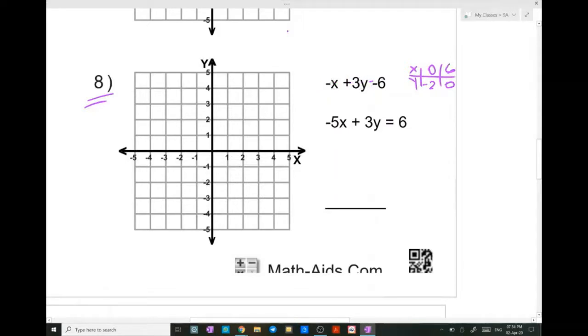So we draw minus 2 for y and 6 for x. So this would be your line. This is the line representing the first equation.